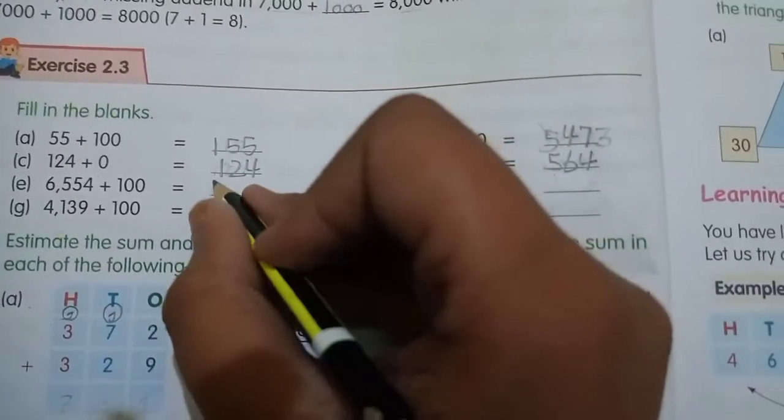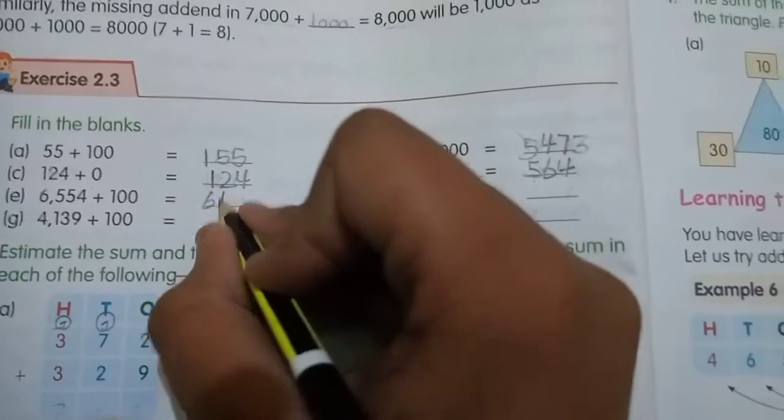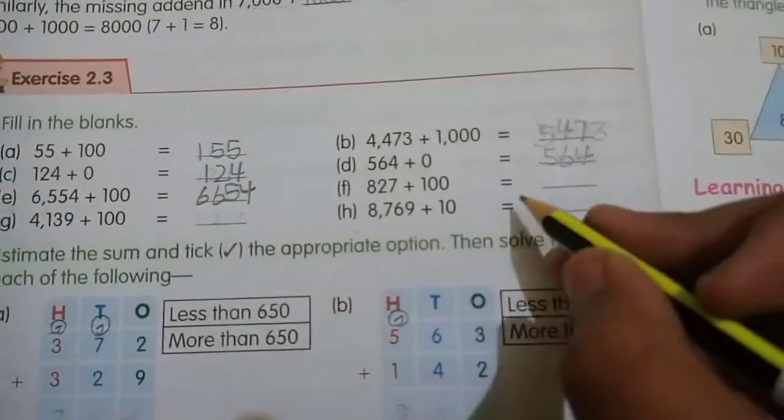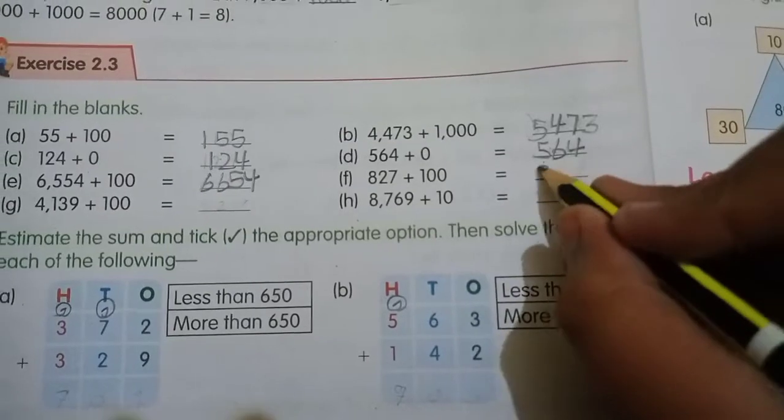(e) 6554 plus 100, so you have 6654. (f) 827 plus 100, so you have 927.